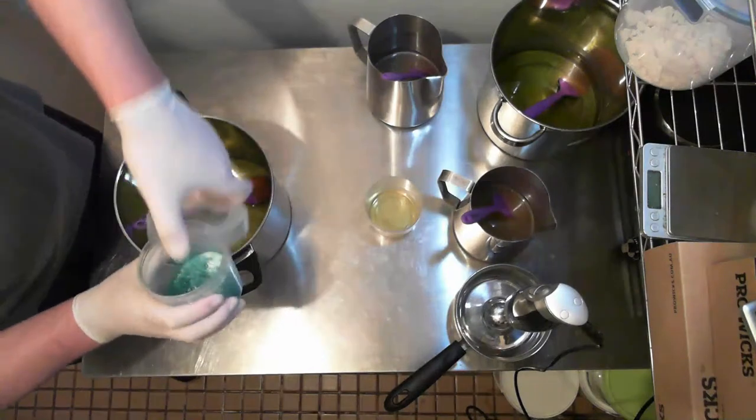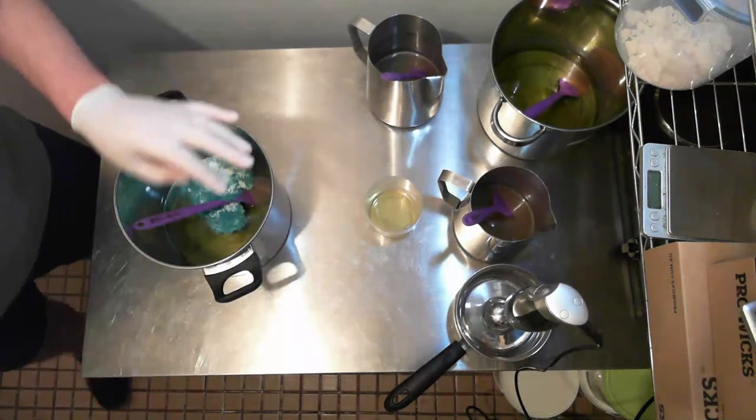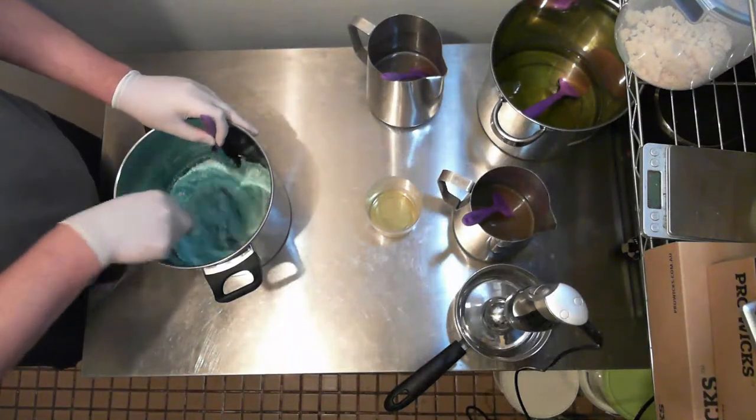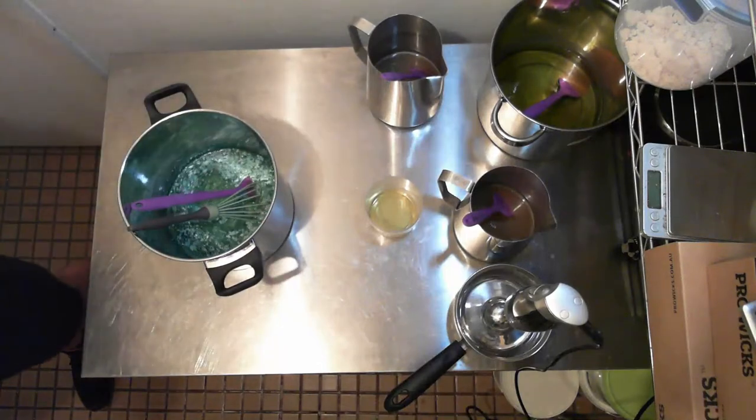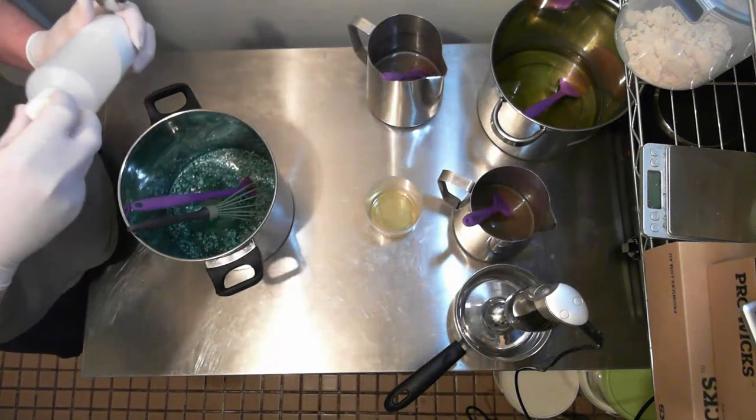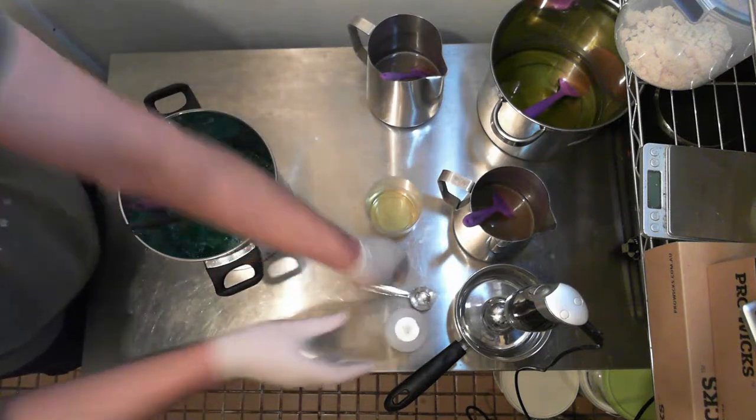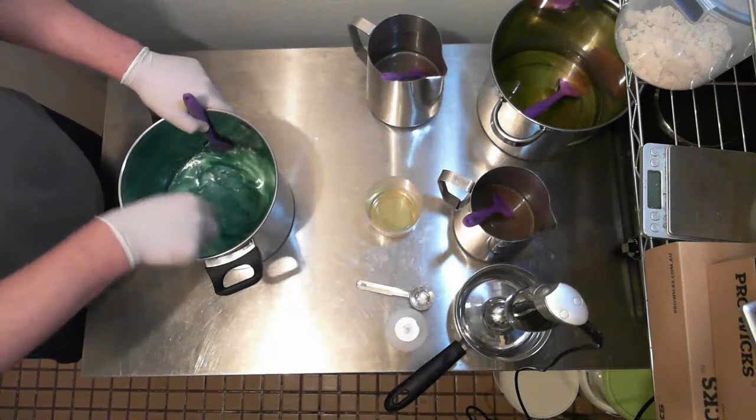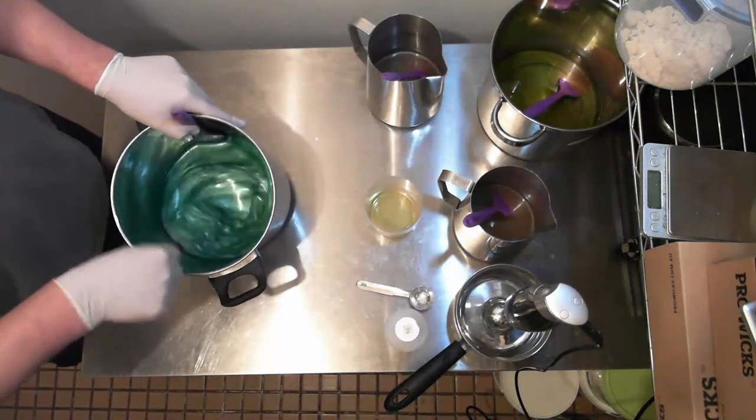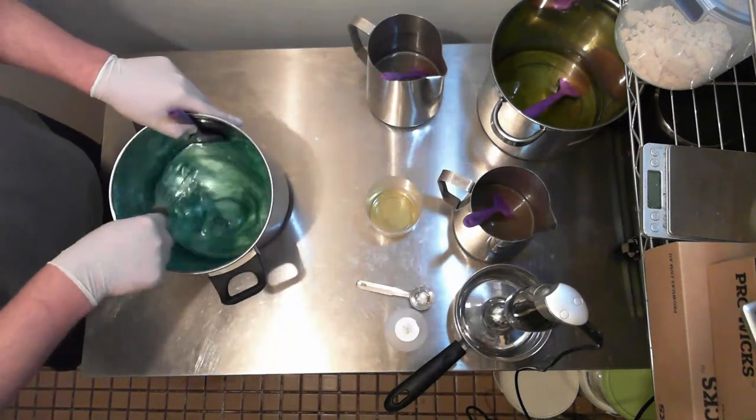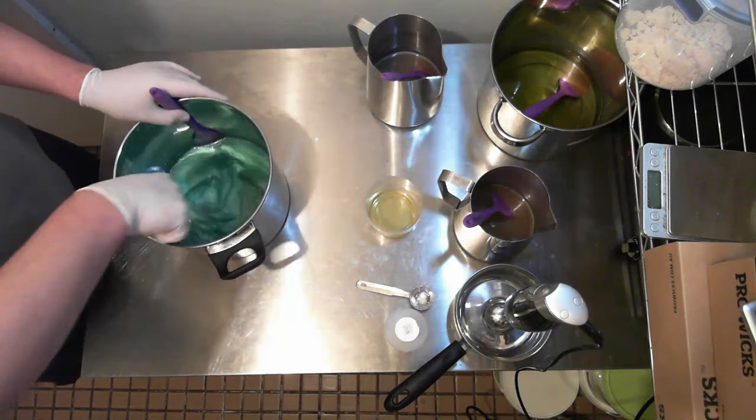So before I add the lye water, I just want to, because I'm not doing multicolors, because I don't know how these are going to perform. I don't know if it's going to accelerate trace or anything like that. So I always add the colors first. If it's just a single color, then I'll add it straight to the oil phase and I'll give it a nice stir. Also, so I don't forget, I've got some titanium dioxide here dispersed in distilled water. I'm just going to put a tablespoon of that in because of the olive oil to keep it light.